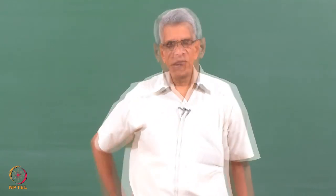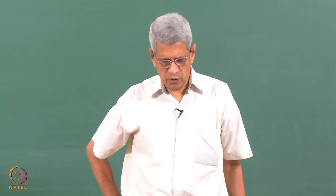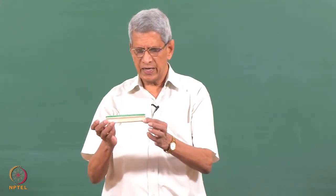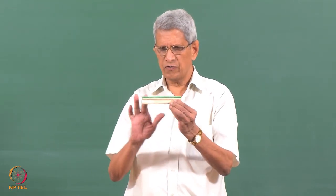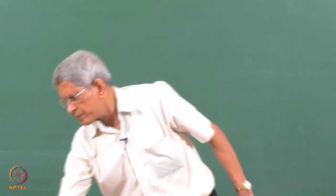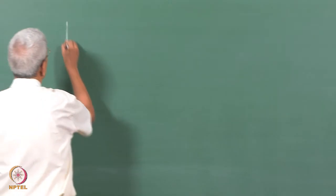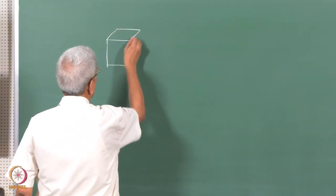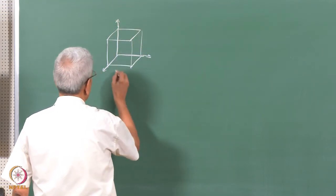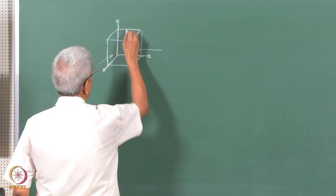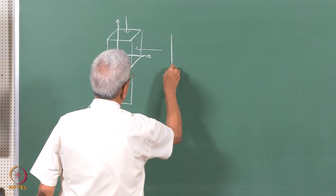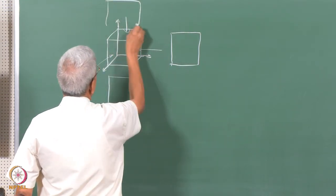One projection used extensively in engineering is orthogonal projection. In orthogonal projection, when we look at an object, we draw a plan — the front view, side view, and top view — and this is a parallel view of the sample. For example, if we have a cube, one view is from this direction, another from this direction, another from this direction, and each will look like a square.